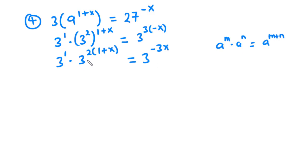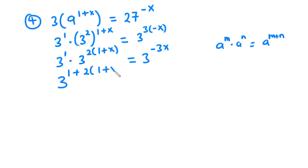So that is what you are going to apply here. So we are going to have 3 exponent 1 plus 2 into bracket 1 plus x, and that is equal to 3 exponent negative 3x.